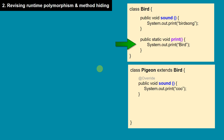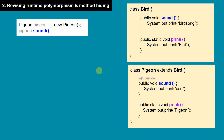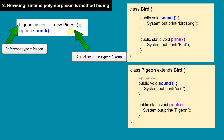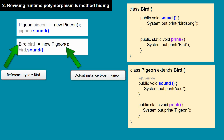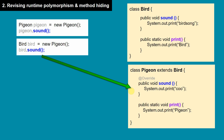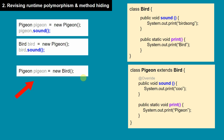Bird class also has a static method print, and Pigeon class has a similar print method, but these are not overriding — they are called method hiding. If we create a Pigeon instance and call the instance method sound, it checks the actual instance type, which is Pigeon, and calls Pigeon's sound method. Note that a child cannot hold a parent object, so Pigeon p = new Bird is not possible.